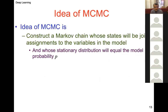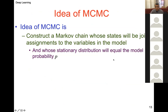The idea of MCMC is to construct a Markov chain whose states are assignments to the variables in the model and whose stationary distribution equals the model probability.